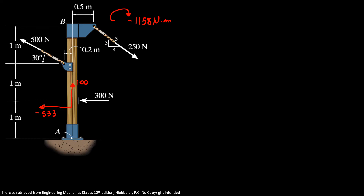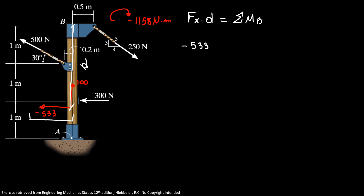The only force that generates the moment is our Fx. So I know Fx times the distance from B — which I'll call d — is equal to the sum of moments about point B. So minus 533 times d equals minus 1158. Therefore, the distance from point B to my position is 2.17 meters.